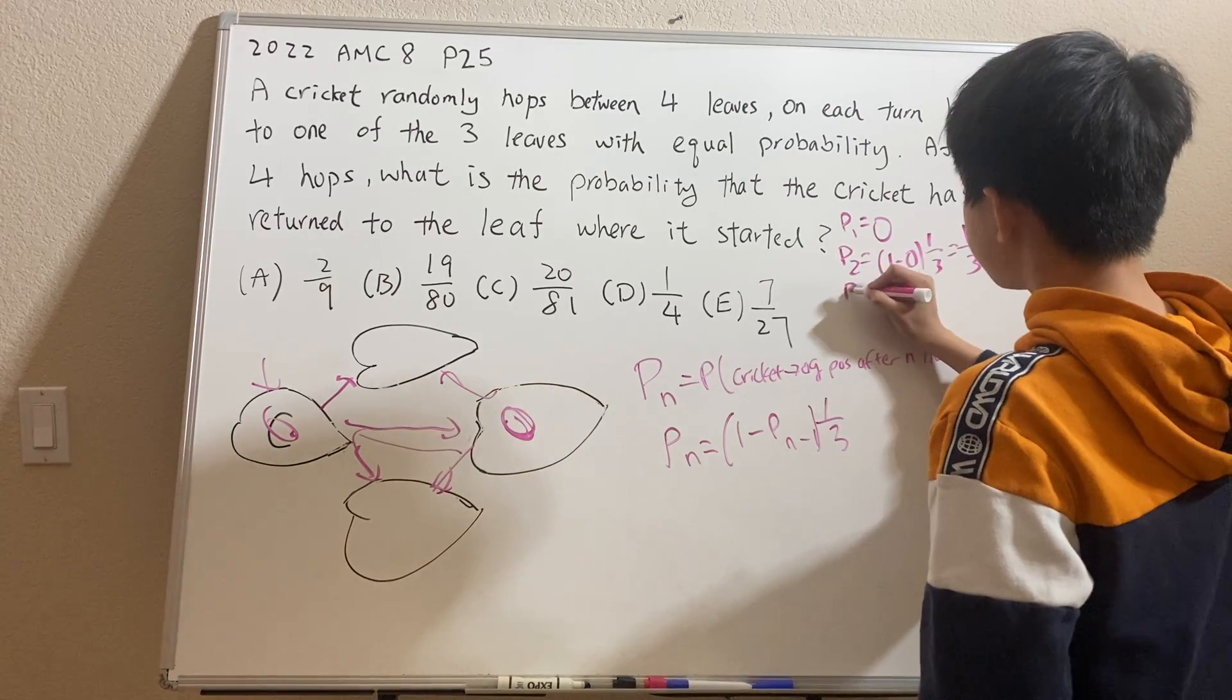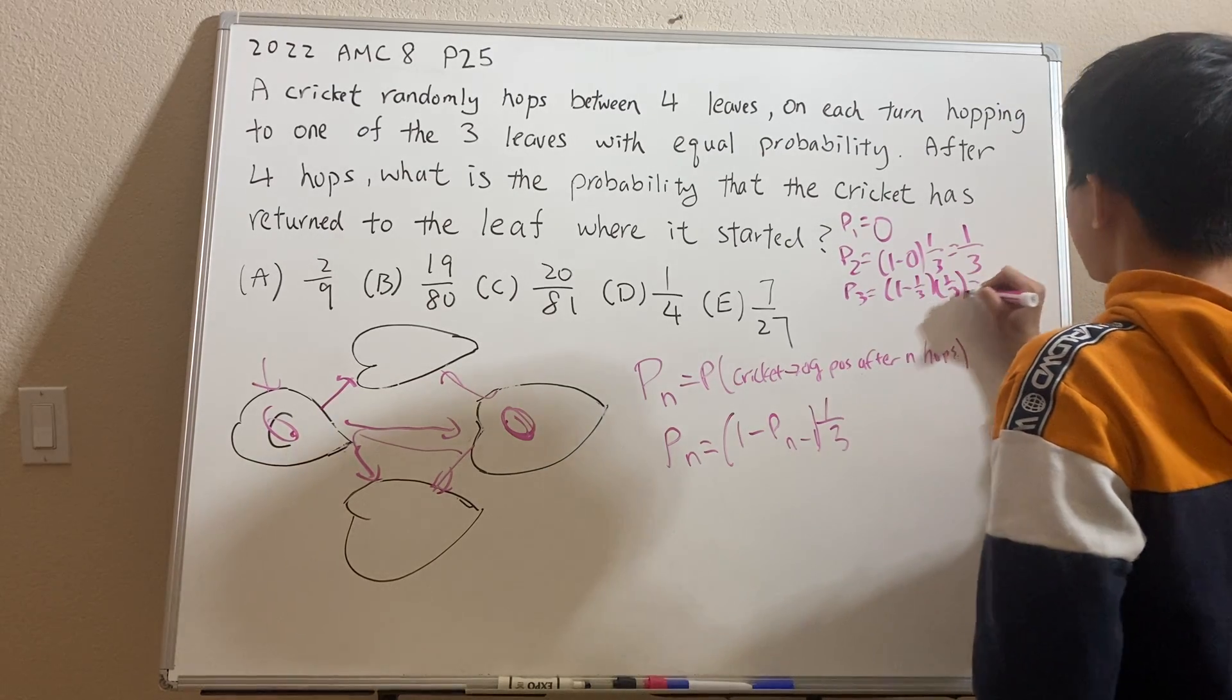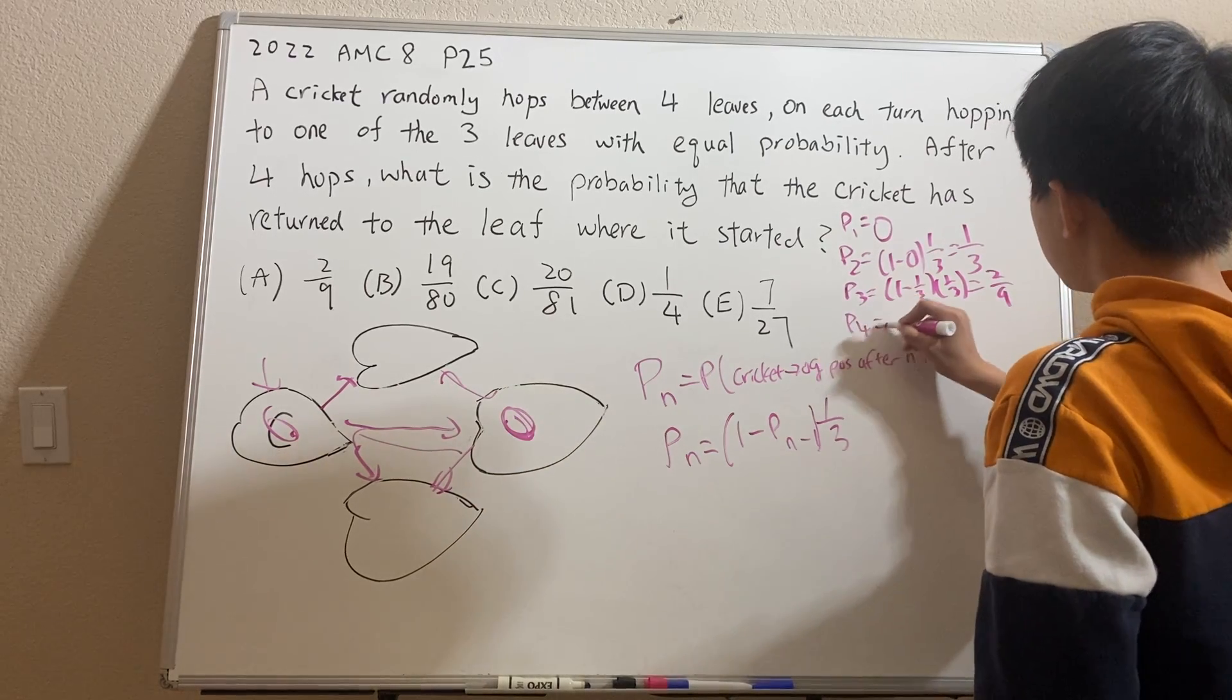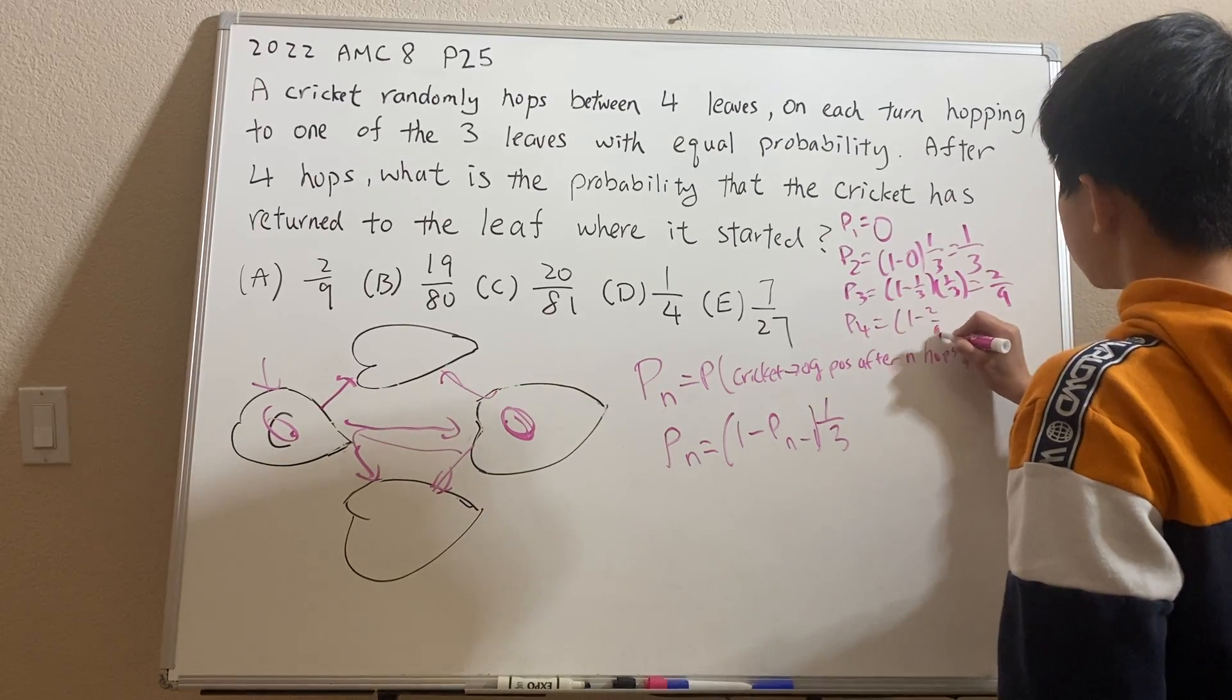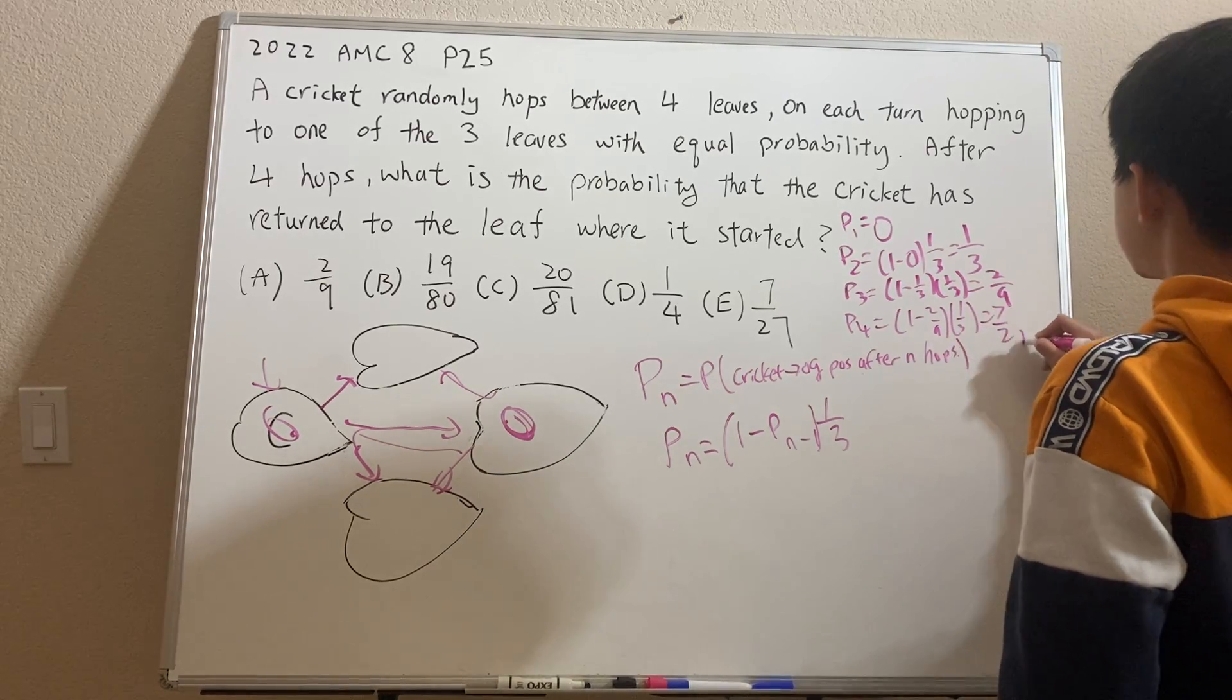Same thing, P(3), 1-1/3 times 1/3, 2/9. And it's very systematic, it's very simple, just the calculation. Now P(4), 1-2/9 times 1/3, which is 7 over 27. And that is actually our final answer.